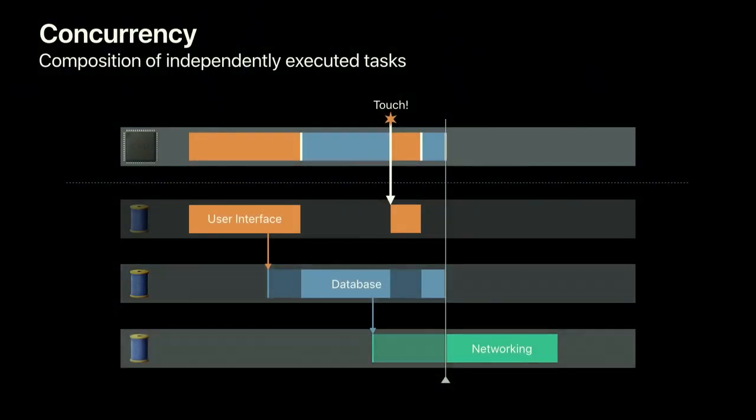This is the advantage of doing work off the main thread. When the user interface is done responding, the CPU can switch back to the database thread and finish the networking task as well. Taking advantage of concurrency like this lets you build responsive apps — the main thread can always respond to the user's action without waiting for other parts of your application to complete.